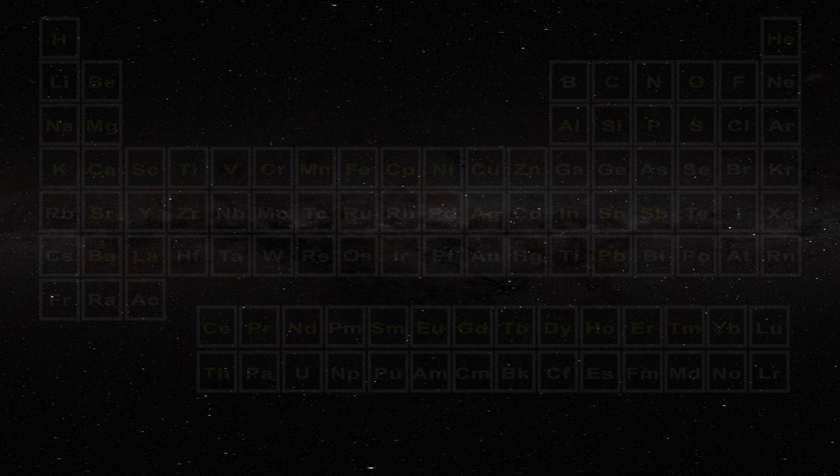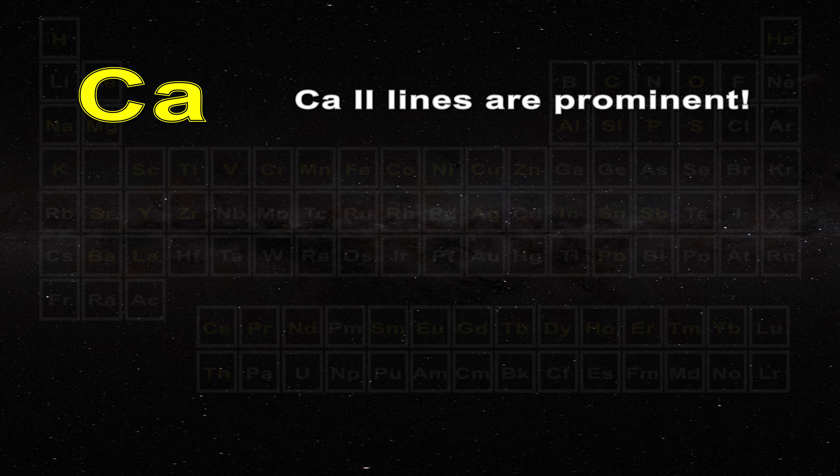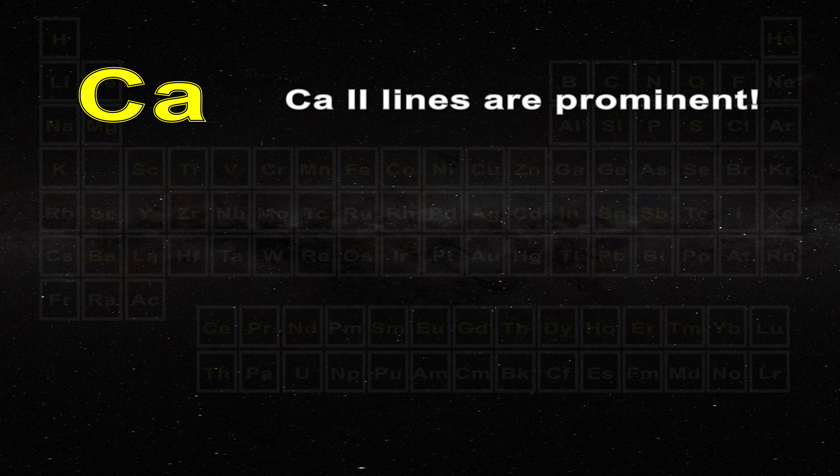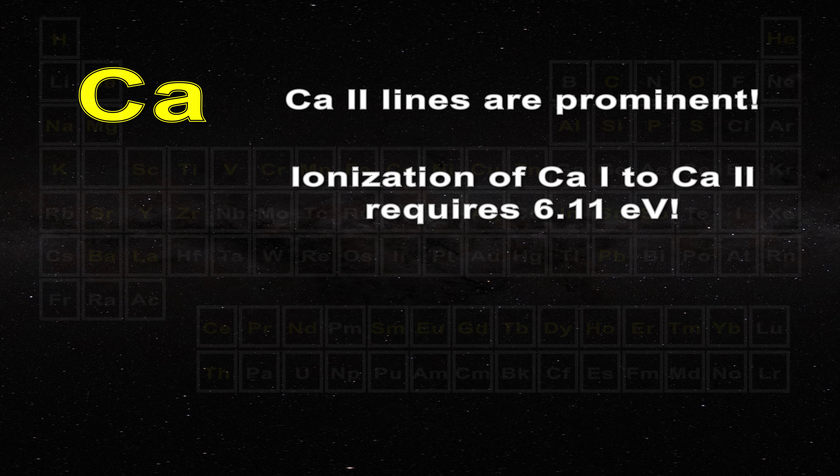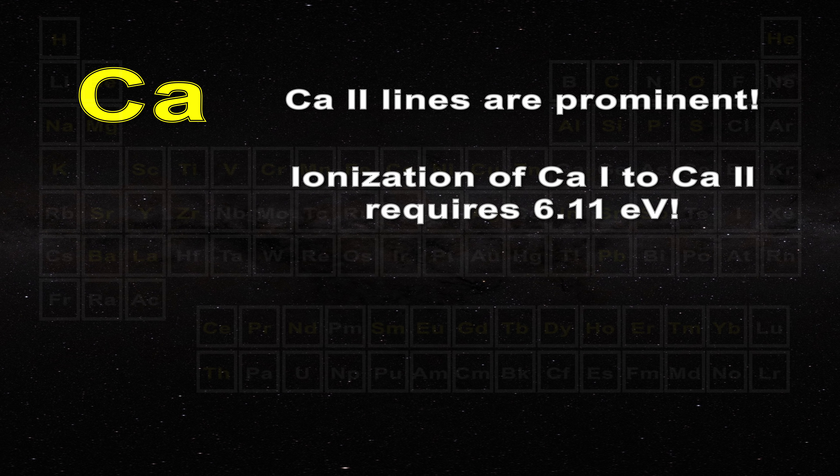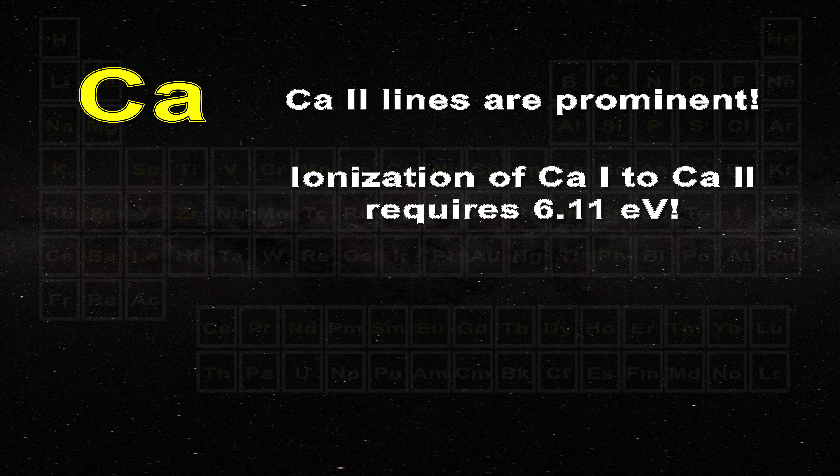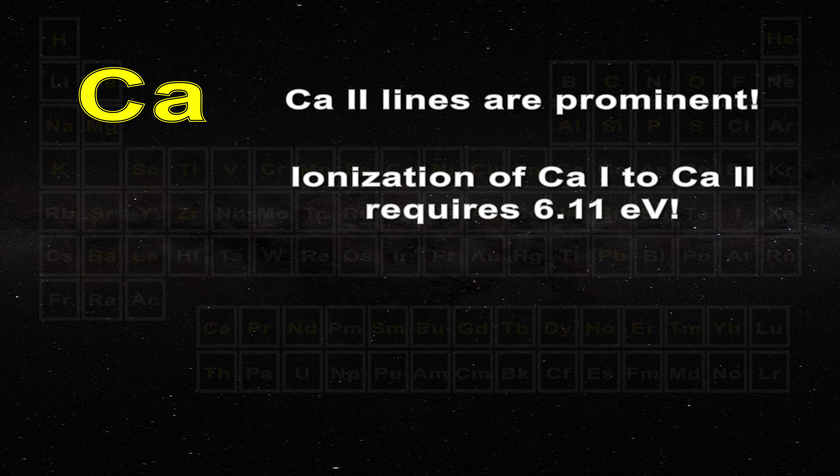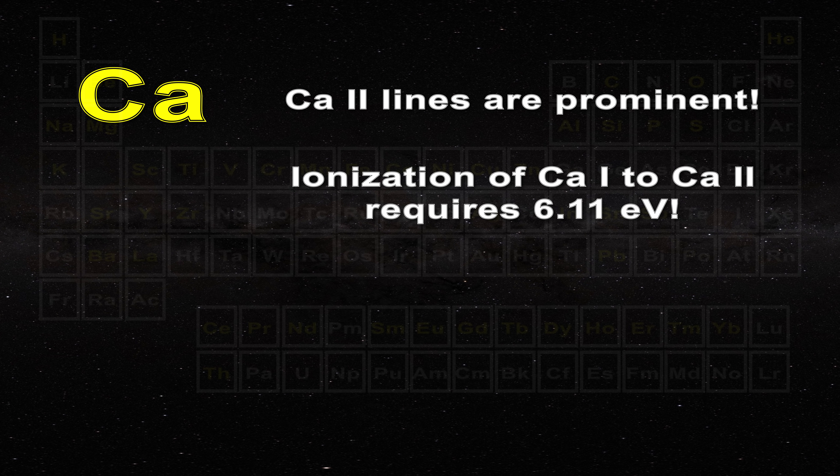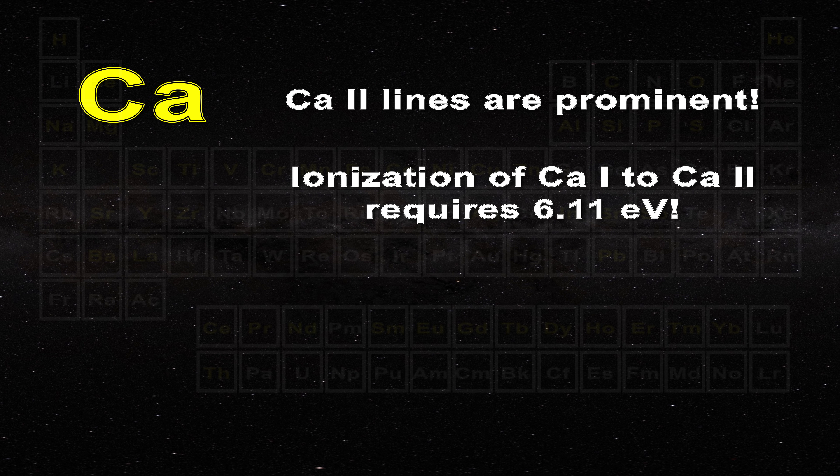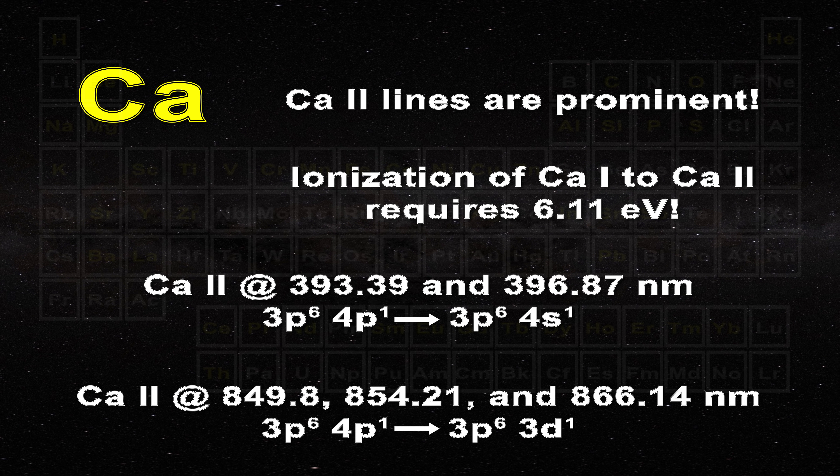Conversely the calcium 2 lines are prominent but the ionization of calcium into calcium 2 requires 6.11 electron volts, that is even more than the 5.8 electron volts required for aluminum 2 lines. The key point once again is that the calcium 2 lines involve a single unpaired electron as you can see in these equations.